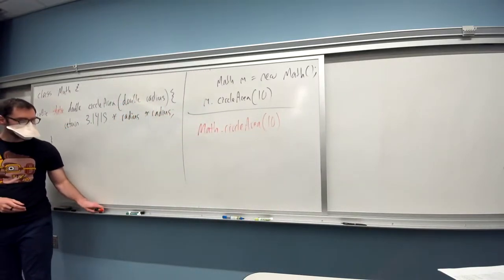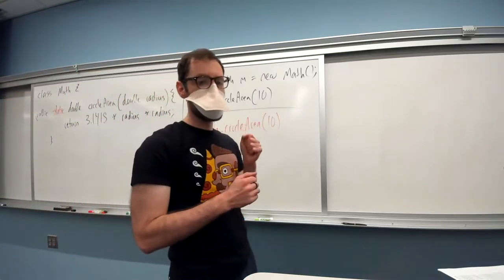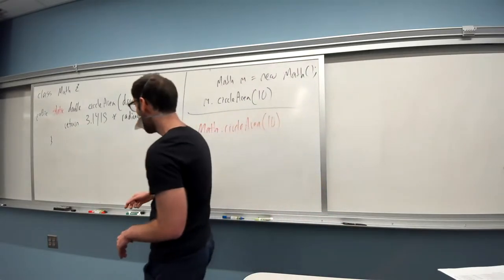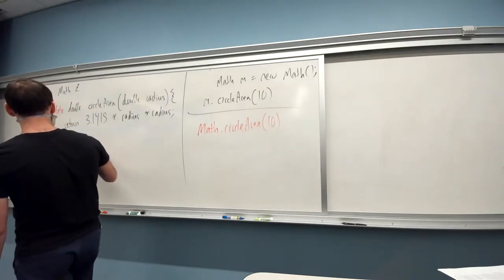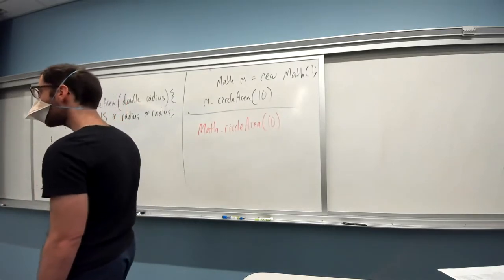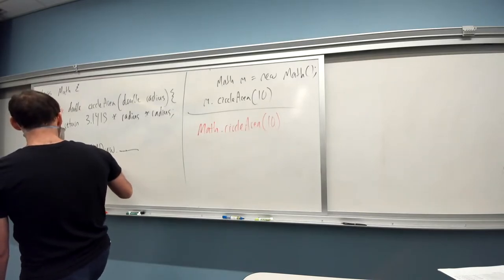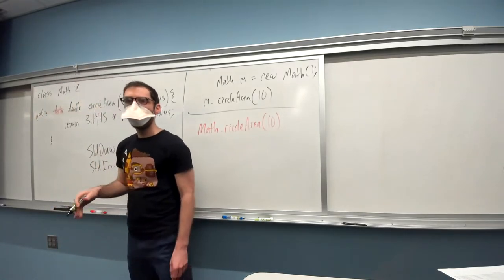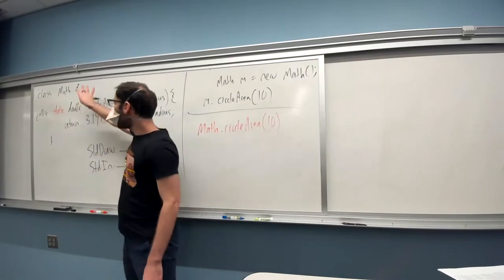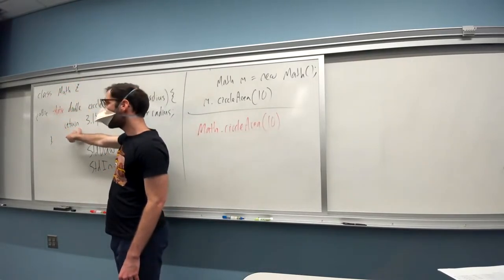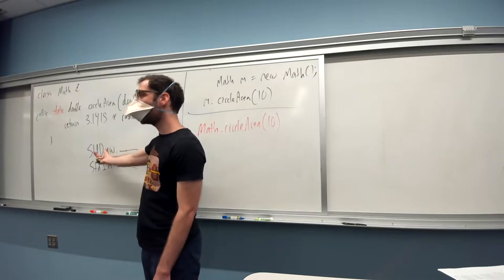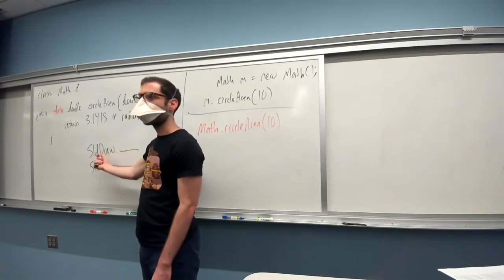This math class is not storing any data. There's nothing about this circle area that relates to a particular instance of the math class. It just takes in an input and does something that only relates to that input. So it sort of stands by itself. It doesn't interact with other parts of the object. And so if I were to make it a static method, I said last time that static means it is not tied to a particular object. It's a method that's associated with the class overall. I don't need to create an instance of the object to use it. So that would mean instead of doing this, I could just say the name of the class math dot circle area 10.